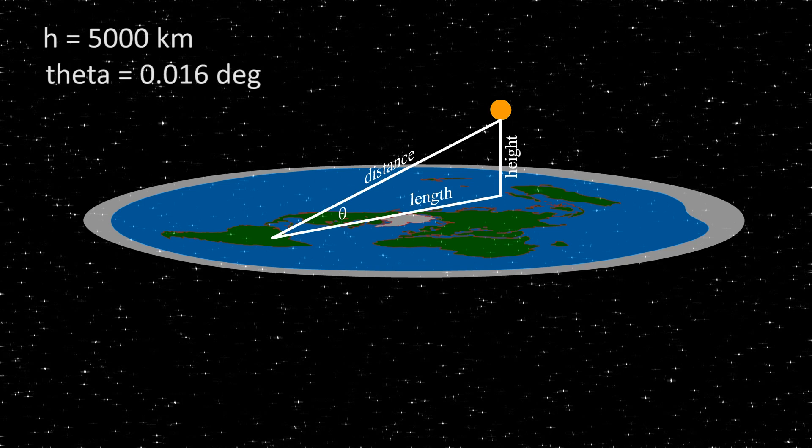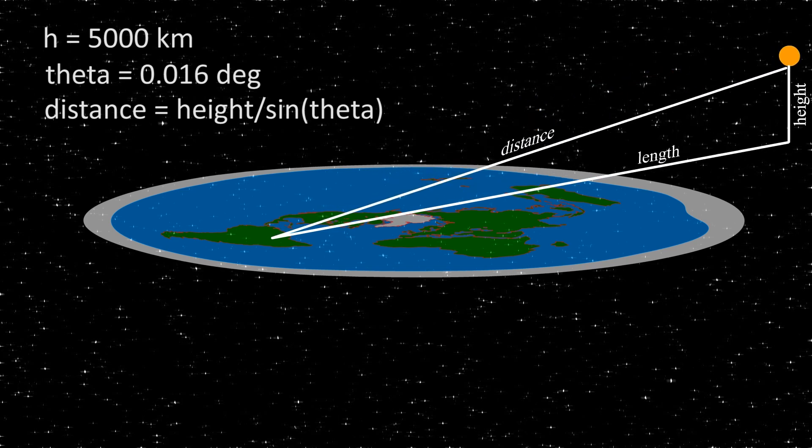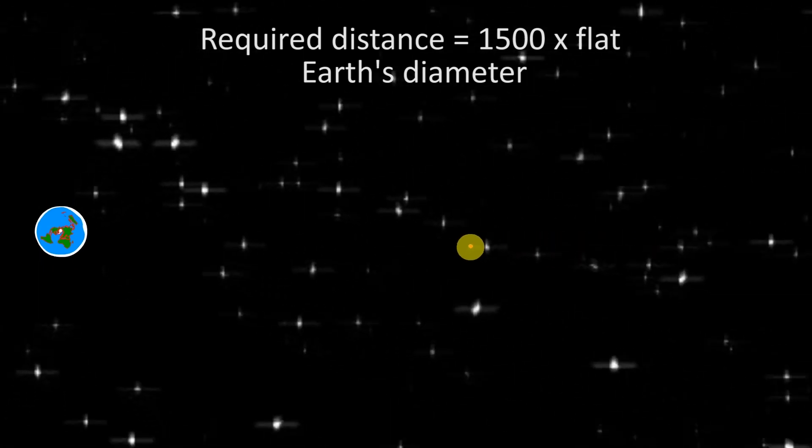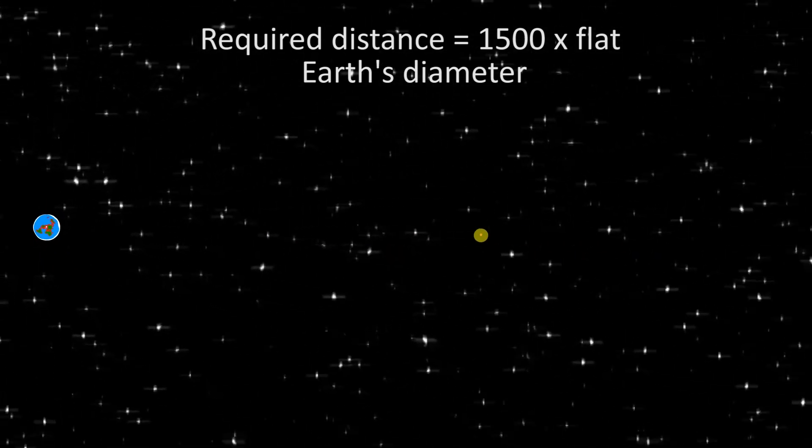So we set theta to 1 minute of an arc and, by applying the sine, the required distance turns out to be roughly 17 million km. The Sun then has to leave the surface of the Earth so the model would look something like this, or as seen from above, with the distance being 1500 times larger than the diameter of the flat Earth. So it is by no means a good explanation.